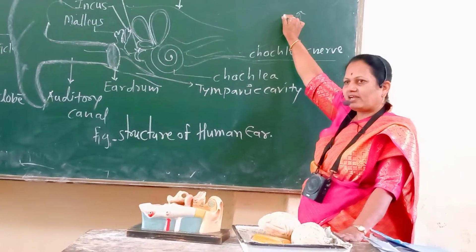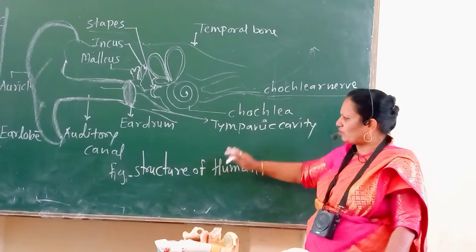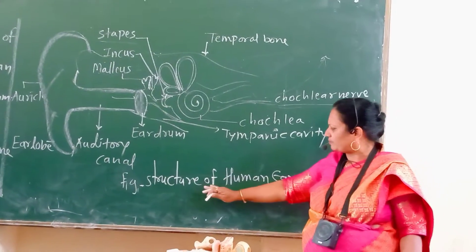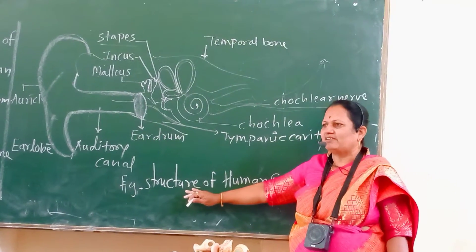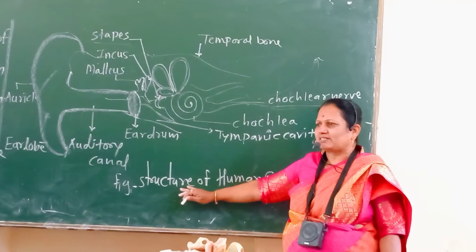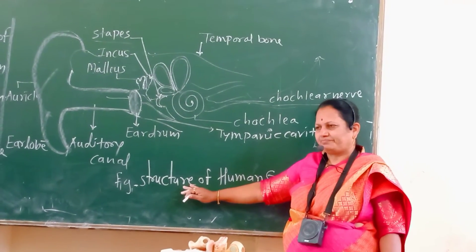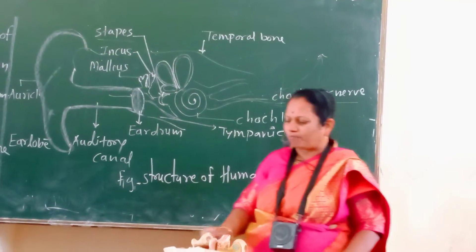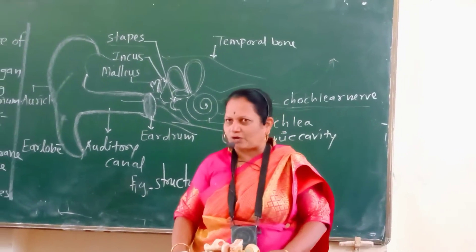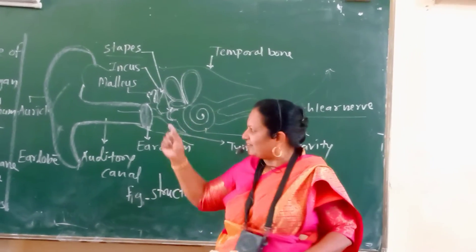Where identification of the sound occurs. The overall function of the human ear is the sense of sound. It is a most important sense organ in our body. Two ears are present.